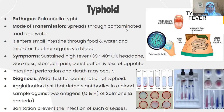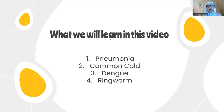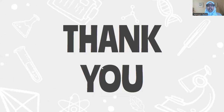Sanitation is very important. Treatment includes antibiotics — chloramphenicol is helpful in treating typhoid. That's all for typhoid. In the next video we will be talking about common diseases including pneumonia, common cold, and ringworm. Take care, see you in the next video, keep revising.